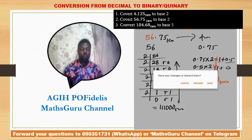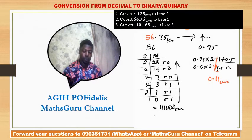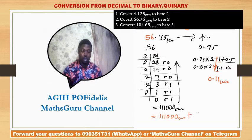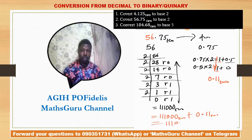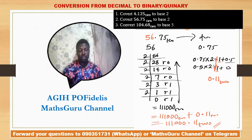Joining the two parts together gives 111000.11 in base 2. So 56.75 in base 10 is equal to 111000.11 in base 2.